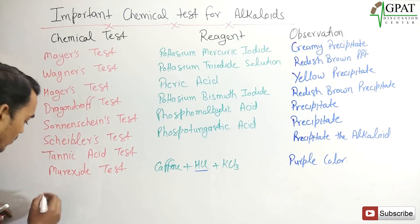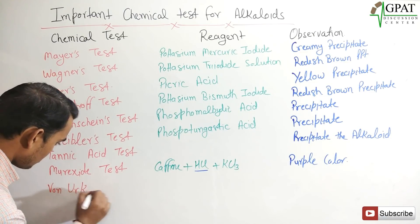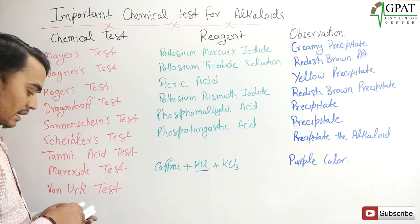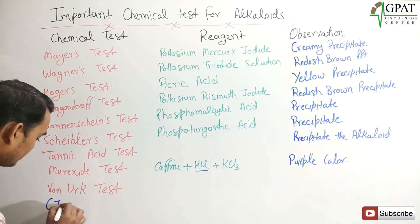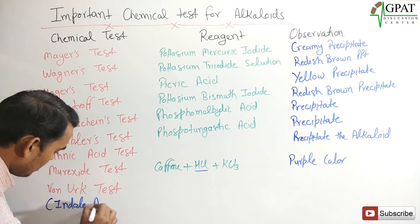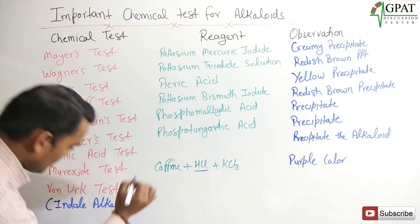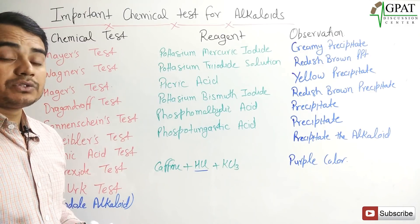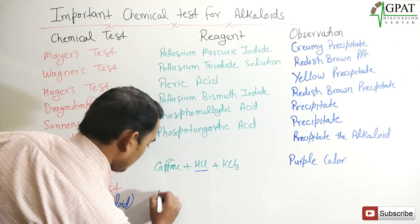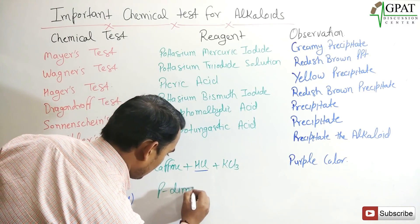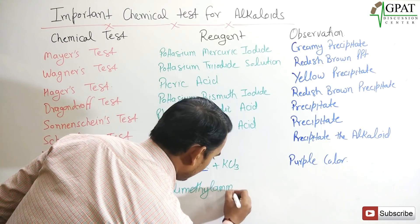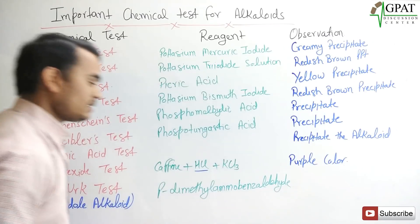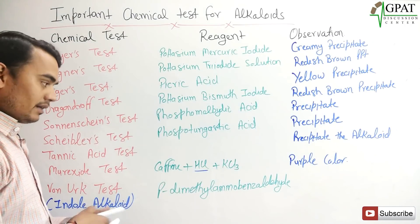The next test is the Van-Urk test. This test is specific for indole alkaloids. In this test, we add the Van-Urk reagent, which is paradimethylaminobenzaldehyde. The observation is a blue color.